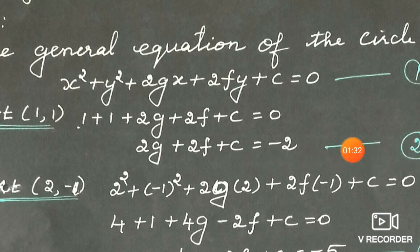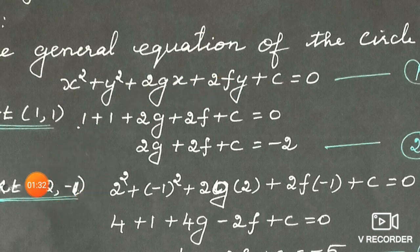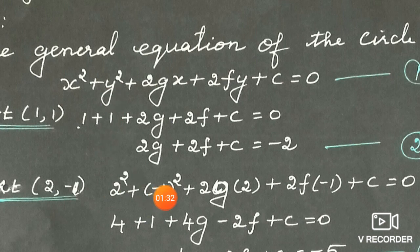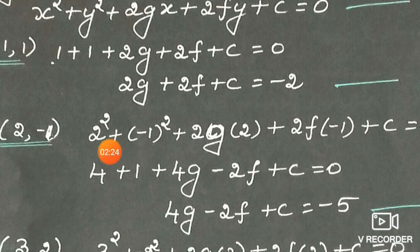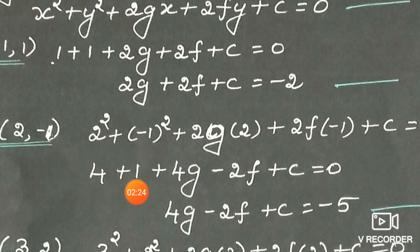Name this equation 2: 2g + 2f + c = -2. Next, substitute the second point (2, -1) into the equation, because the point lies on the circle. Instead of x substitute 2, and instead of y substitute -1. So 2² + (-1)² + 2g(2) + 2f(-1) + c = 0. That is 4 + 1 + 4g - 2f + c = 0. So 4g - 2f + c = -5.